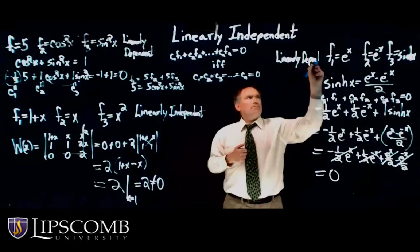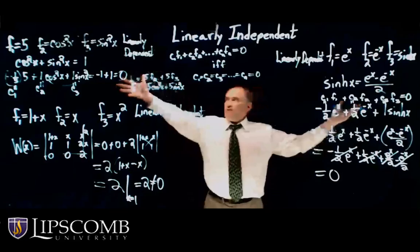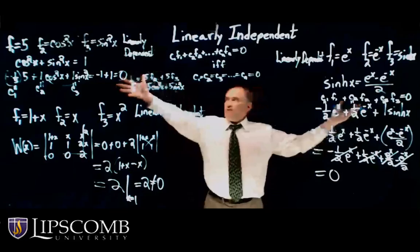If they're linearly dependent, it's easier to show it just straightforward by doing what I've done in these two examples. If they're linearly independent, the only way to do it is by the Wronskian. And you always need to give at least one x where it's non-zero, the Wronskian. So that's linearly independent.